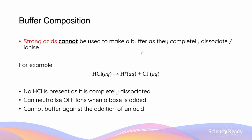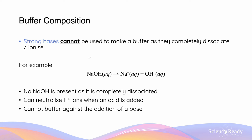Strong acids cannot be used to make a buffer because they completely dissociate or ionize. For example, HCl in water exists entirely as H⁺ and Cl⁻ ions — it is not in equilibrium, and therefore when we add OH⁻, while it will neutralize H⁺ to increase the pH, the equilibrium cannot shift back to the right-hand side to recreate the H⁺ ion. The same issue occurs with a strong base: sodium hydroxide completely dissociates into Na⁺ and OH⁻, and because it is not in equilibrium, this cannot reverse the change by shifting back to the right-hand side.